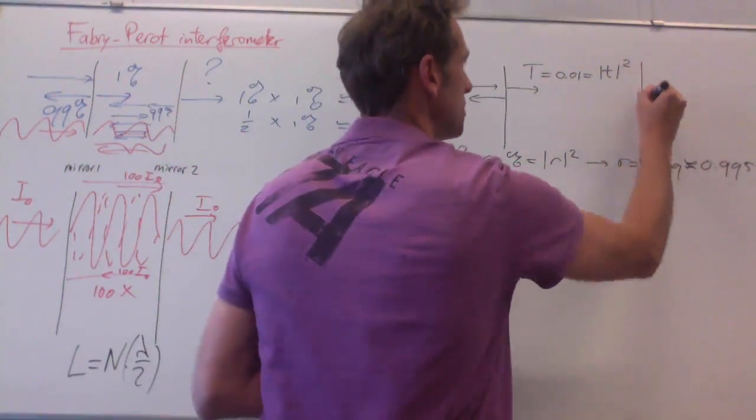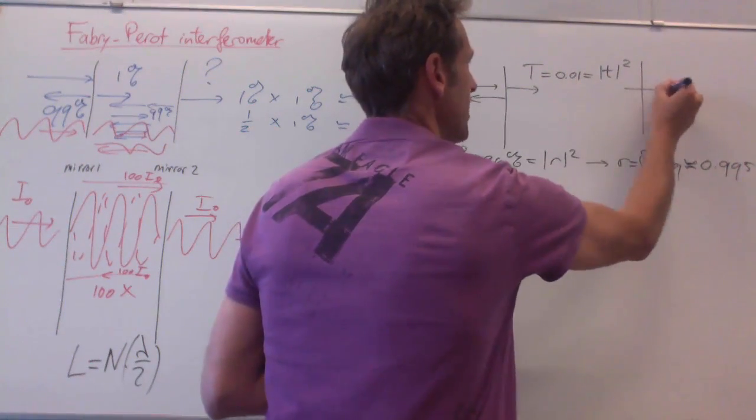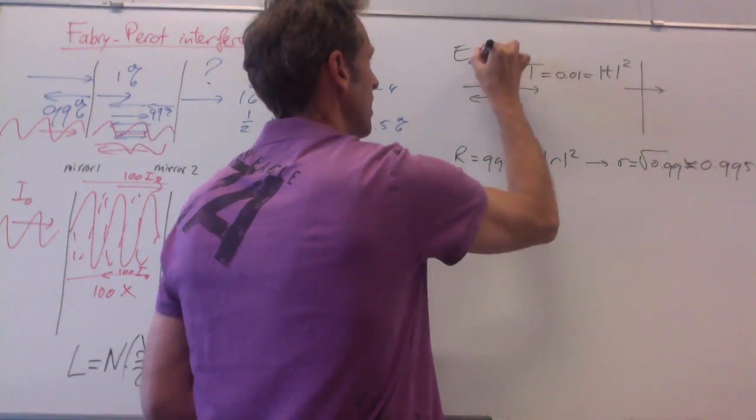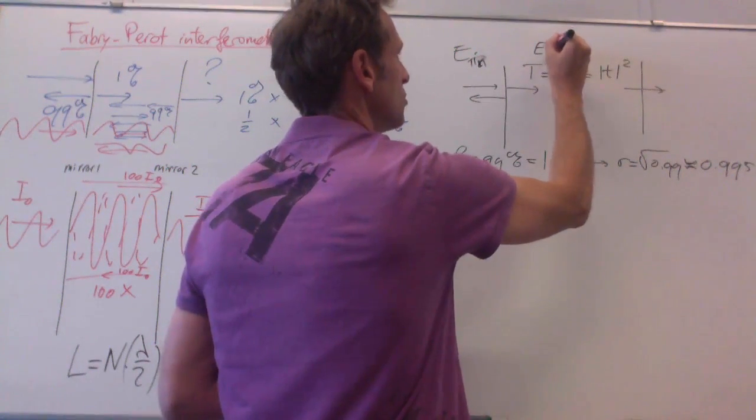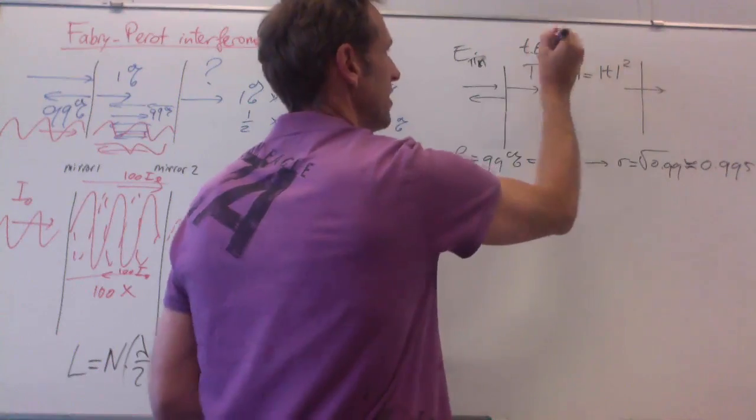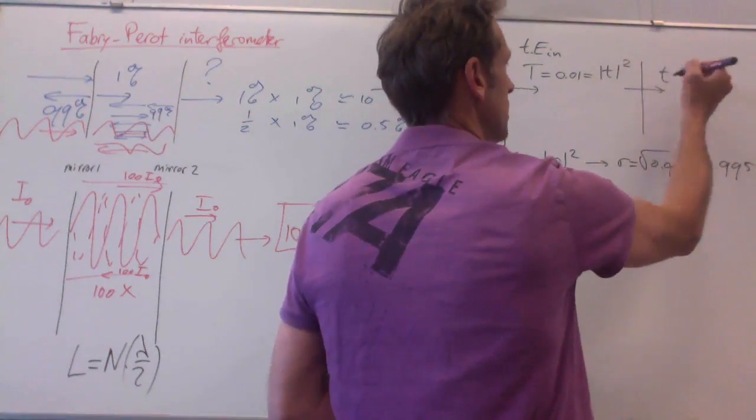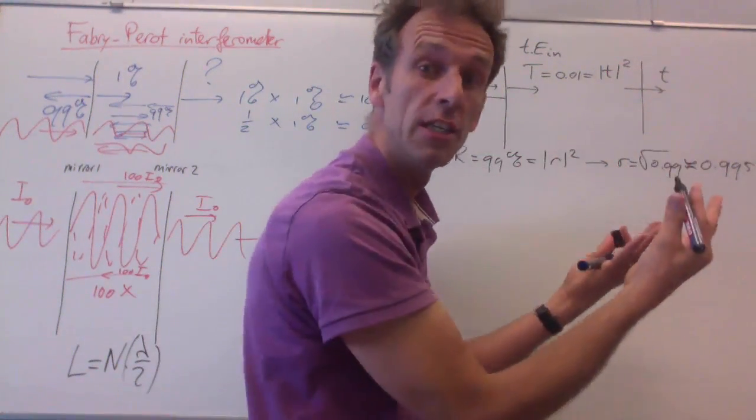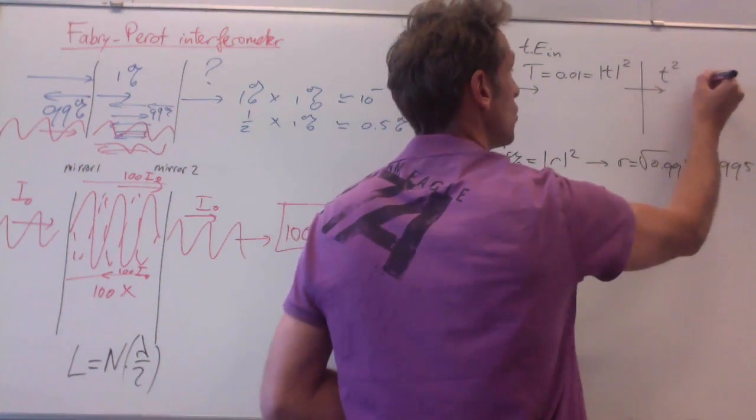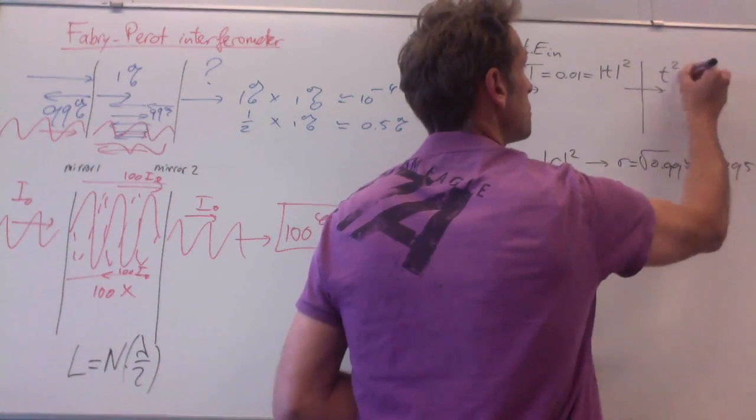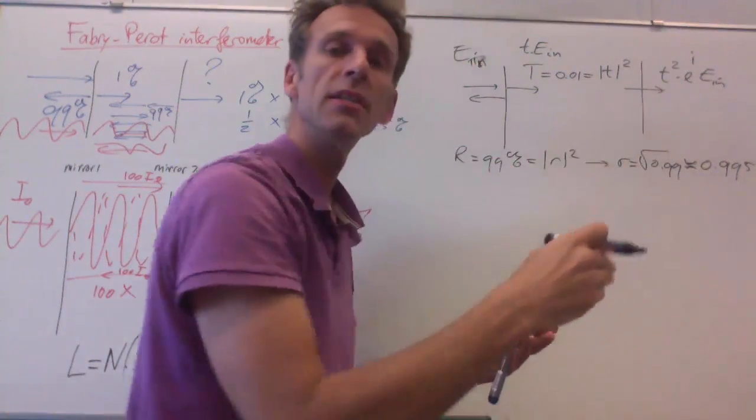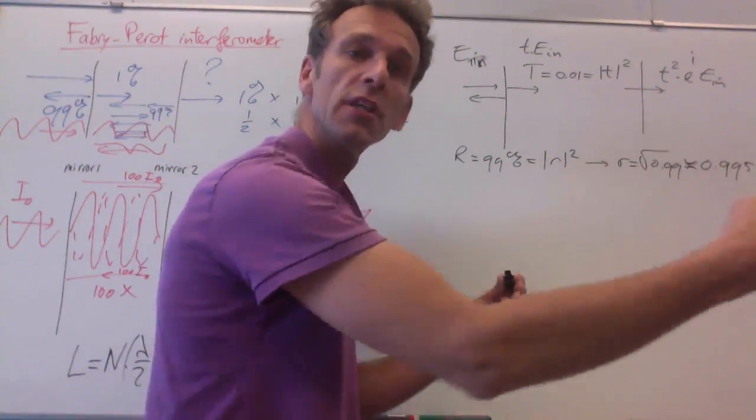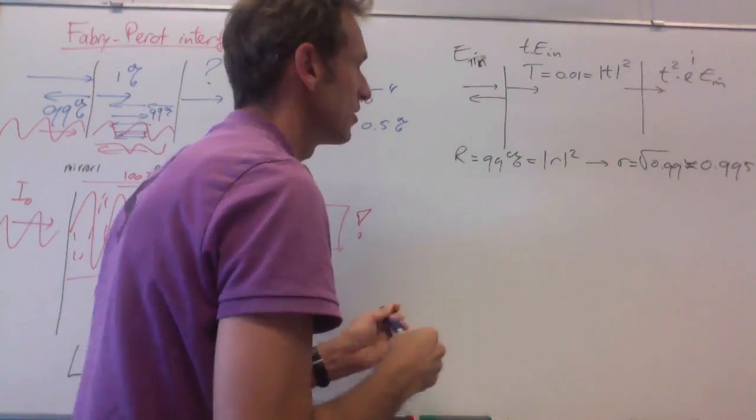This is one thing we have to consider: amplitudes. And the other thing we have to consider is, when you have an input field Ein, and here an internal field t times Ein, then what you get out, you get another factor t for the transmission, so you get t squared Ein, but there is also a phase factor, because the light propagates in the cavity and thus acquires a phase.